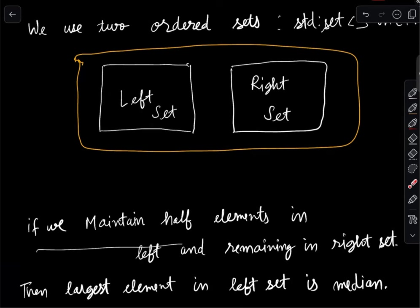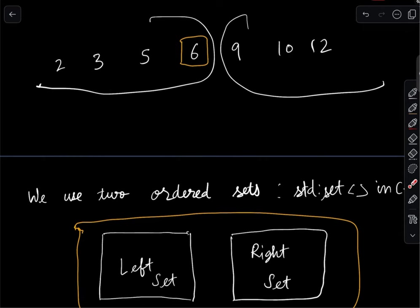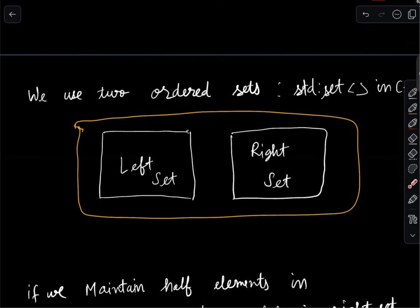For erase: check both sets — if the element is in the right set, remove it from there; otherwise it must be in the left part, so remove it from there. For get-median: if the two sets are maintained correctly, it is straightforward. The main problem is that after insert or remove, the balance between the two sets can be disturbed.